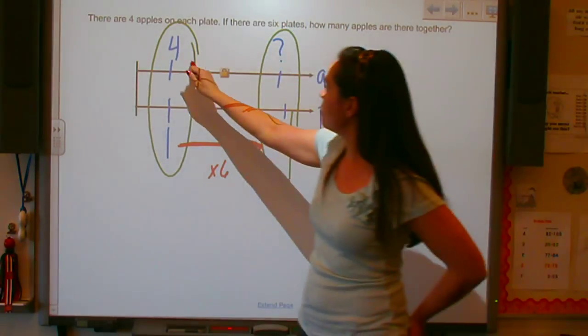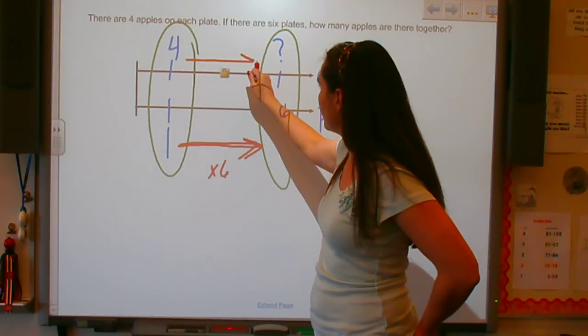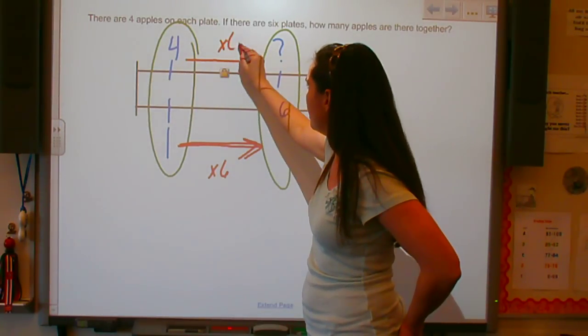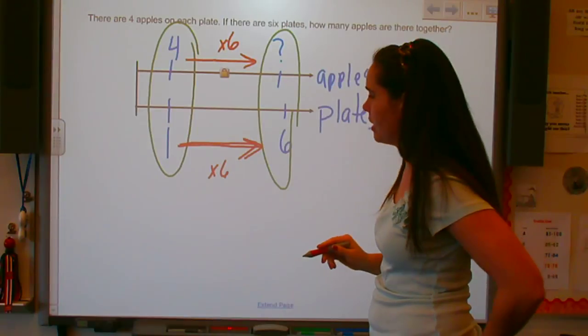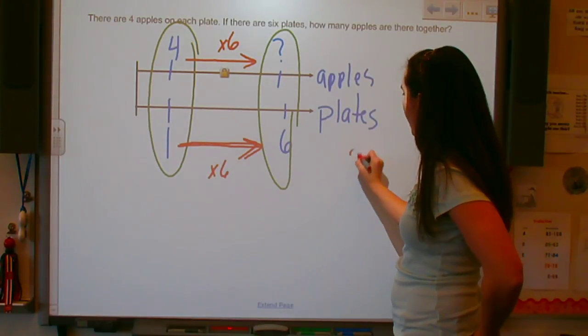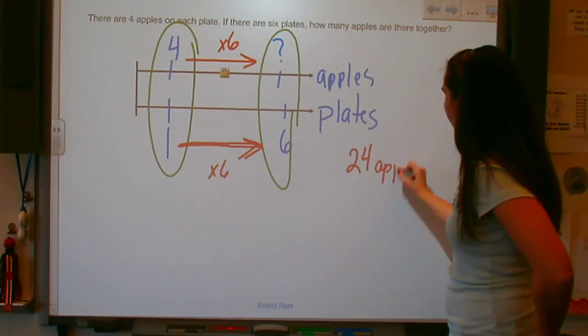So if I want to move from here to here on my number line, I just need to say four times six. And so therefore, I have 24 apples.